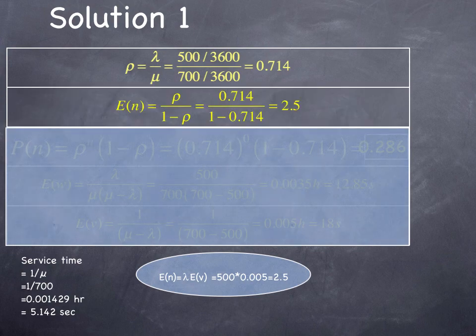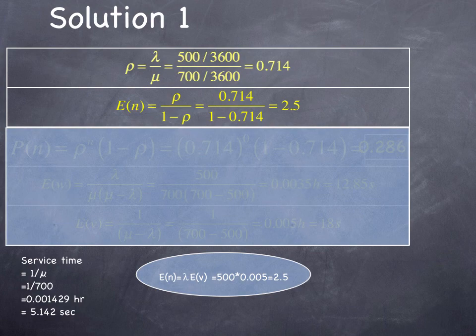Next, we want to calculate the expected number of vehicles in the queue for an M/M/1 process. Rho over 1 minus rho, which is 2.5. 0.714 over 1 minus 0.714.